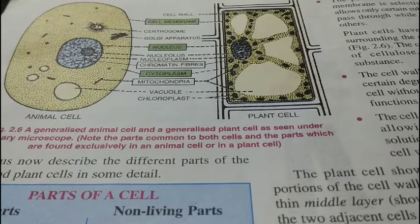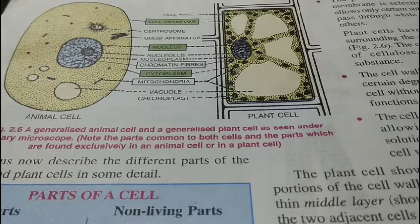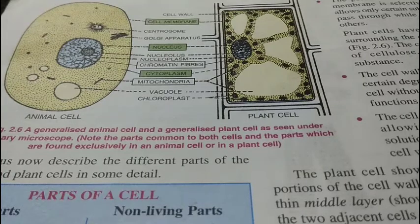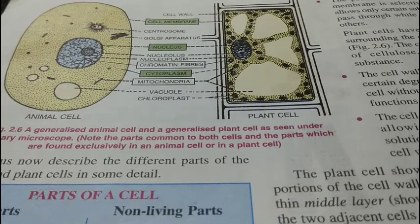The centrosome in animal cells is the site where cell division starts. Plastids are only found in plant cells. If a plastid is green-colored it is called a chloroplast; if it is another color it is called a chromoplast; and if it is colorless it is called a leukoplast.